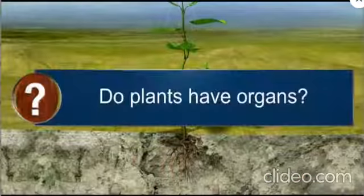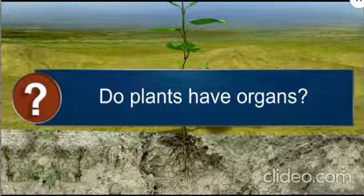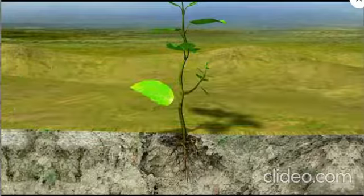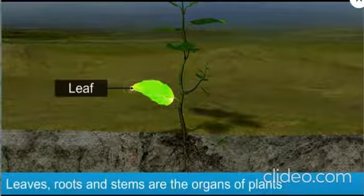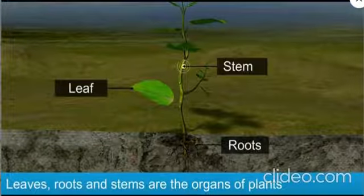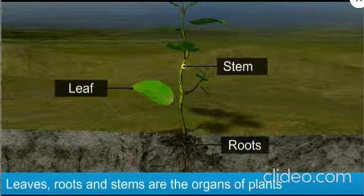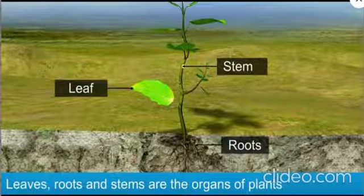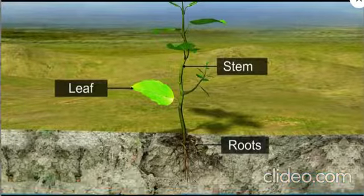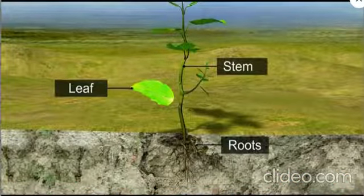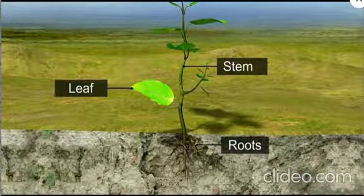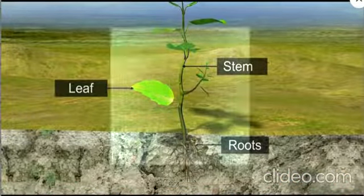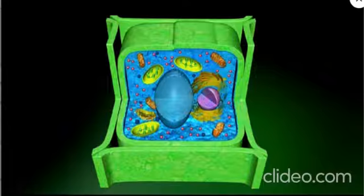Do plants have organs? Leaves, roots, and stems are the organs of plants. Like animal tissues, these are also made of tiny units of cells.